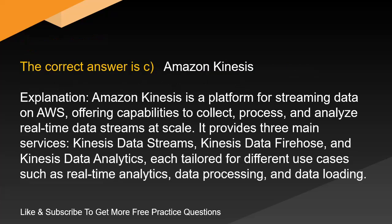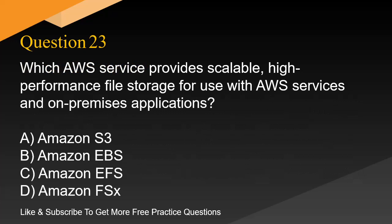Question 22. The correct answer is C: Amazon Kinesis. Amazon Kinesis is a platform for streaming data on AWS, offering capabilities to collect, process, and analyze real-time data streams at scale. It provides three main services: Kinesis Data Streams, Kinesis Data Firehose, and Kinesis Data Analytics, each tailored for different use cases such as real-time analytics, data processing, and data loading.